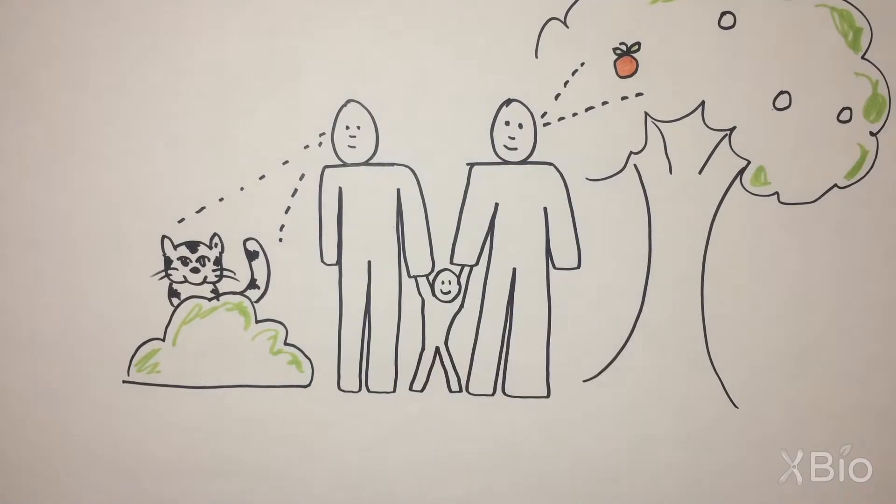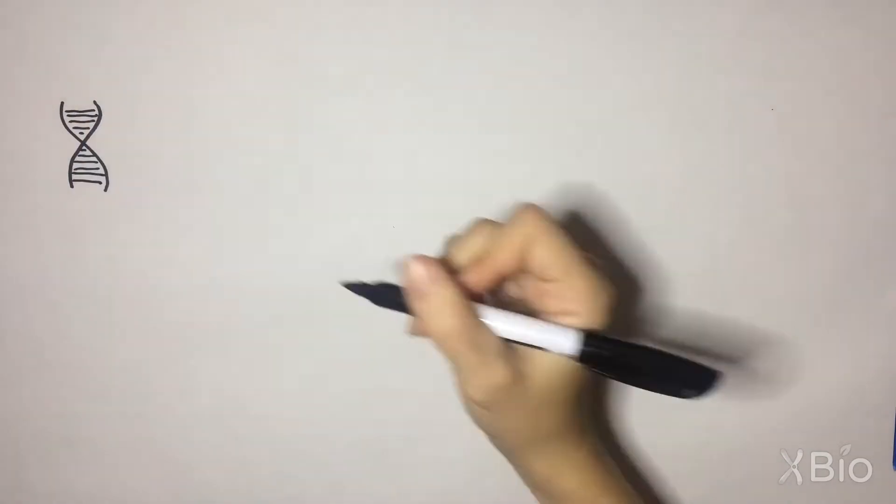These difficulties are called selective pressures and represent the driving force of evolution. How do we go from a water-dwelling animal to one that can see on land?